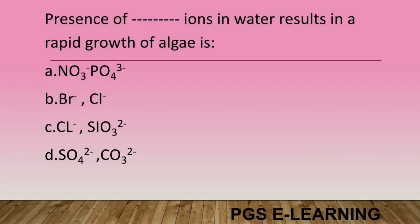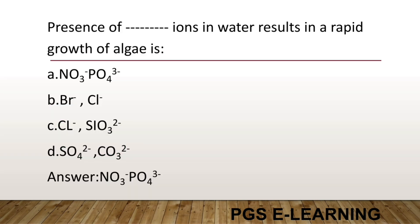The process of excess fertilizer runoff in water resulting in adaptive growth of algae (eutrophication) is caused by: Option A, NO3⁻ and PO4³⁻. Option B, Bi⁻ and Cl⁻. Option C, Cl⁻ and SO3²⁻. Option D, SO4²⁻ and CO3²⁻. Correct answer is NO3⁻ and PO4³⁻.